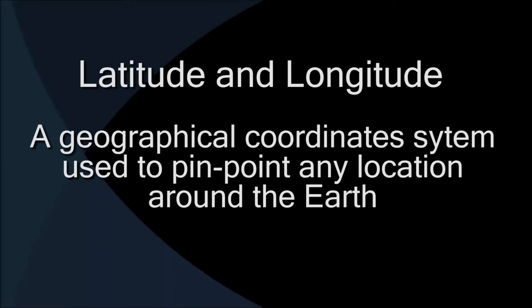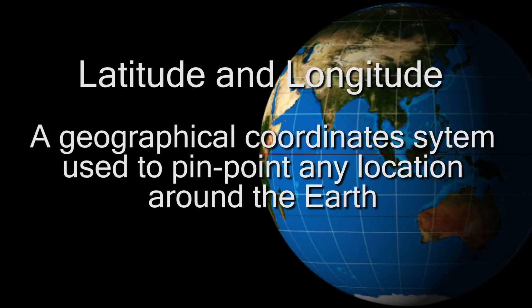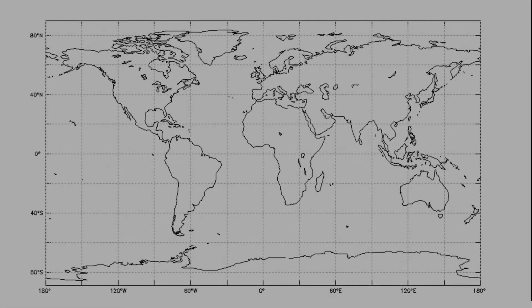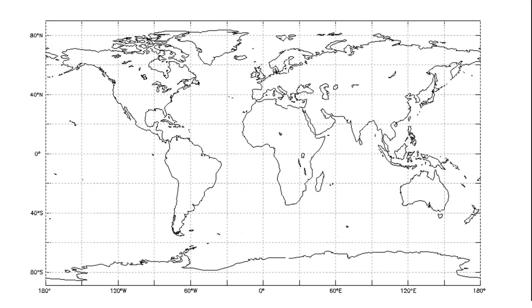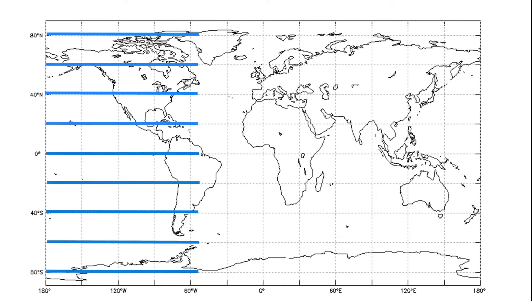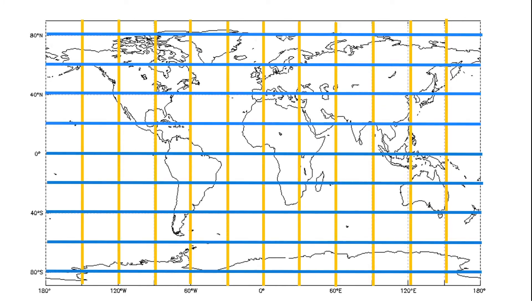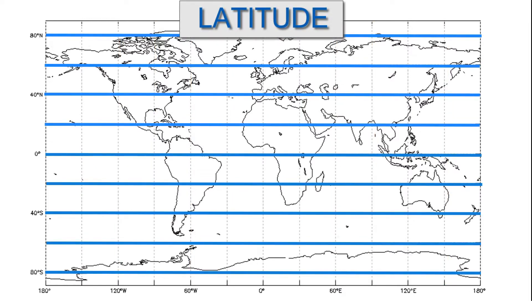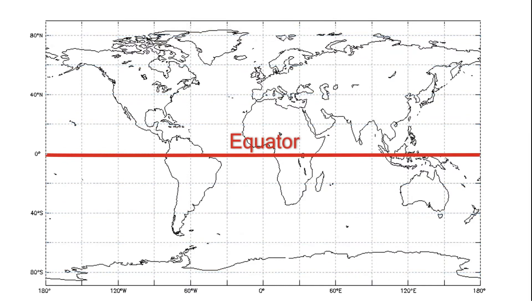Lines of latitude and longitude are geographical coordinates used to pinpoint any location on the Earth. Let's begin on this global map that displays a series of horizontal and vertical lines. Lines of latitude measure the position north or south of the equator, depicted by these horizontal lines. The equator is an imaginary line that is equally distant from both the north and south poles.